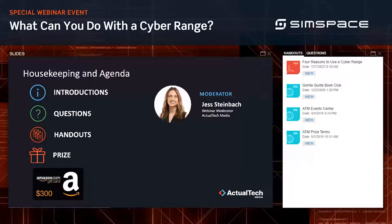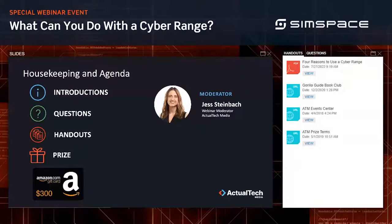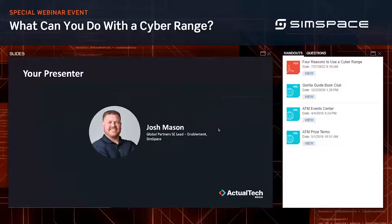Shift your eyes to the handouts tab, right next to the questions tab. There you'll find a white paper from SimSpace — 'Four Reasons to Use a Cyber Range' — plus a link to the Gorilla Guide Book Club and the Actual Tech Media webinar calendar. We're also giving away a $300 Amazon gift card at the end. You must be in live attendance to qualify; full terms and conditions are in the handout tab.